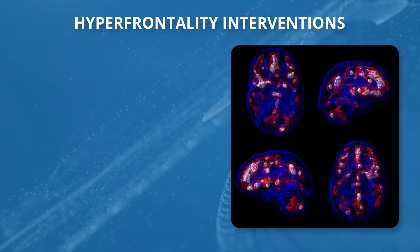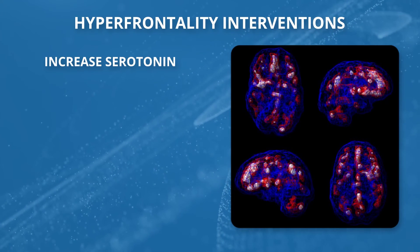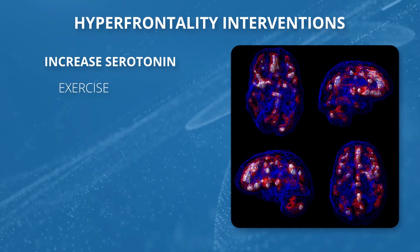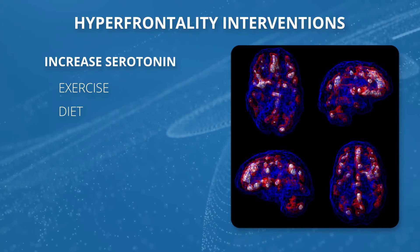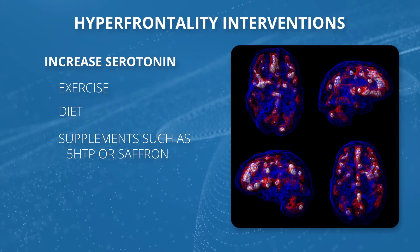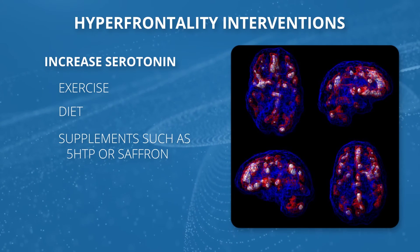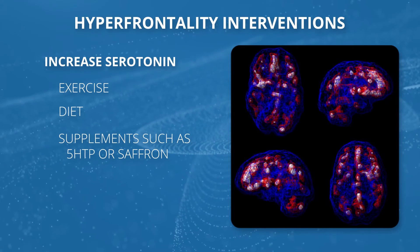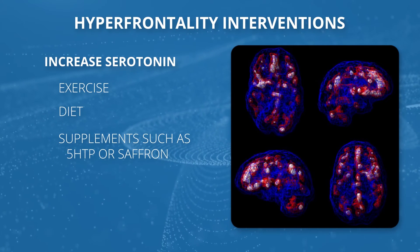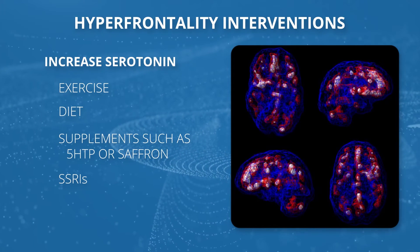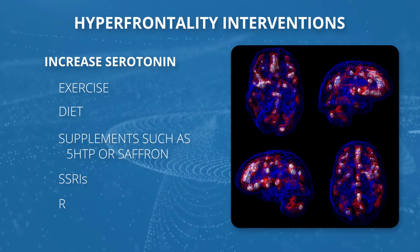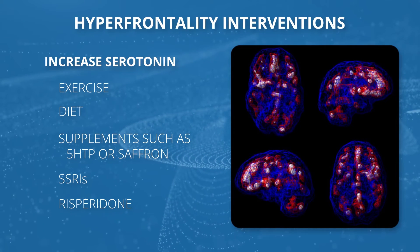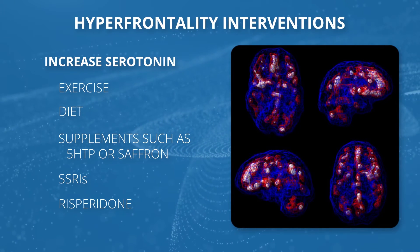When we see the front part of the brain working too hard, we want to raise serotonin. We do that with exercise, certain kinds of diets, and supplements such as 5-HTP and saffron — I'm a huge fan of saffron. If it's more serious, we might use an SSRI. If there's a psychotic process, we'll also consider Risperdal or Zyprexa to help calm things down.